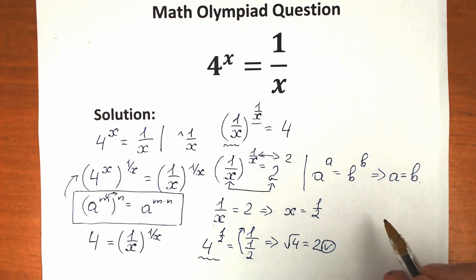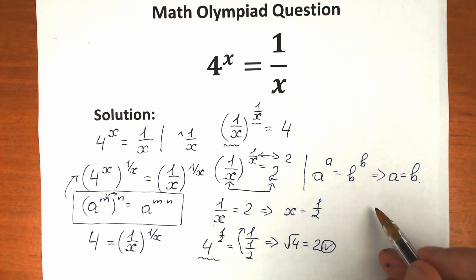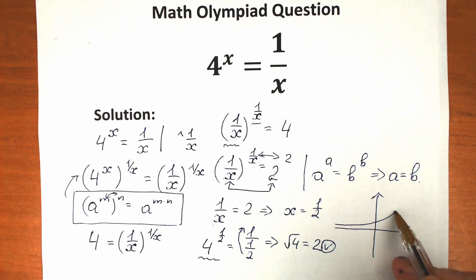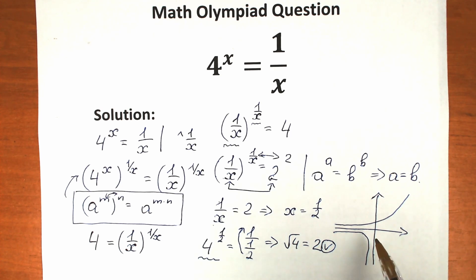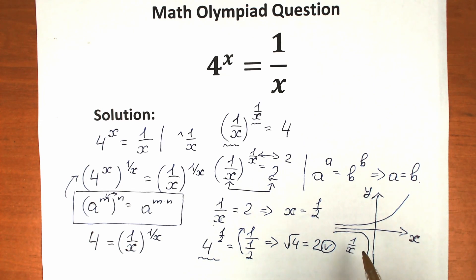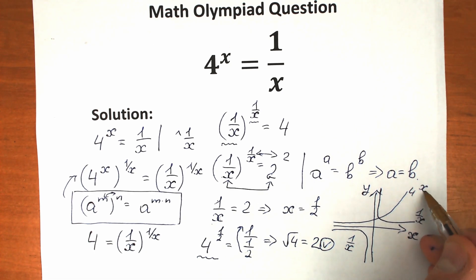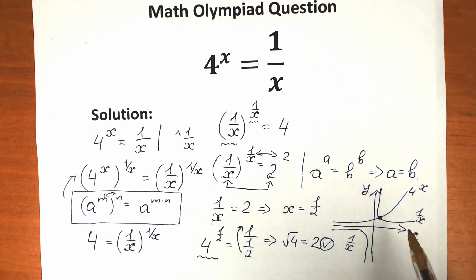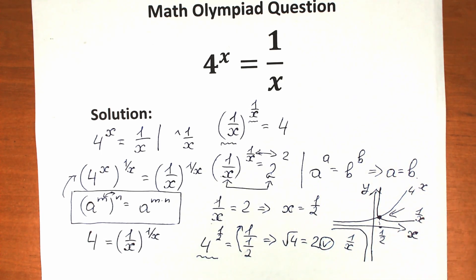For those interested in graphs, we can draw one quickly. We have 4 to the x, our exponential function, and 1 over x, which forms two branches — one in the first quadrant and one in the third — that do not intersect the x or y axes. These two branches together with the exponential curve give only one point of intersection, which confirms there is only one solution: x equals one half.